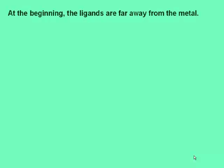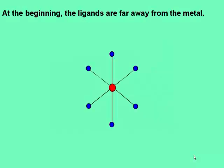At the beginning, the ligands are far away from the metal. Remember that ligands carry a negative charge. It is assumed that the ligands would approach the metal directly along the X, Y, and Z axes.